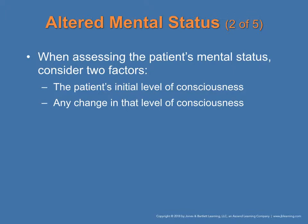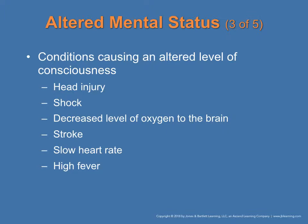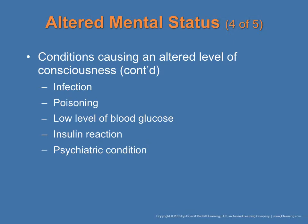That's where a time frame comes in. You may ask the person, a family member, or bystander: at what time did these symptoms start? At what time did you notice a change in the level of consciousness? What can cause altered level of consciousness? A head injury, a fall, shock, decreased level of oxygen to the brain — hypoxia — stroke, slow heart rate, high fevers, infection, poisoning, low blood glucose — hypoglycemia — insulin reaction, and psychiatric conditions.